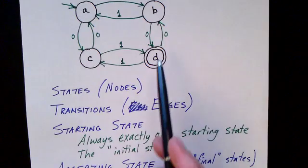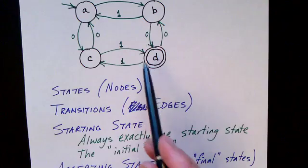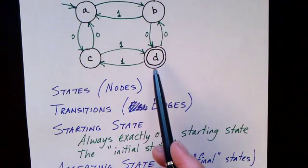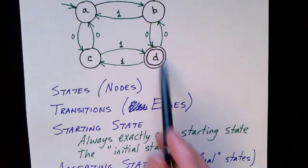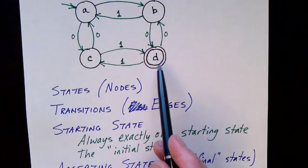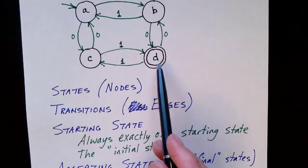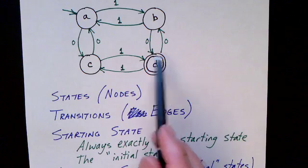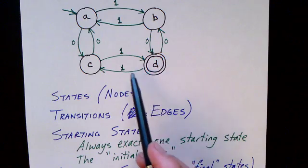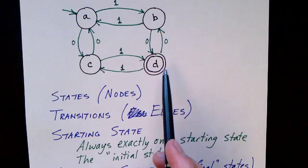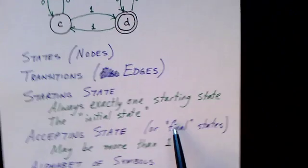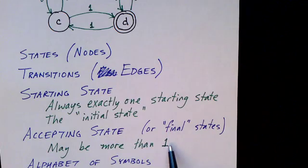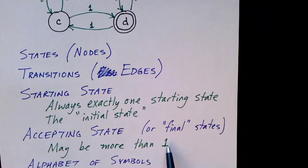In addition, there's always an accepting state. There can be several accepting states, and in fact some finite state machines might not have any accepting state, although that's somewhat of a degenerate case. In this case, our accepting state is D — we just have one accepting state, but in other examples we might have several. These are also called final states, and technically there could be zero accepting states, but that's not a very interesting finite state machine.